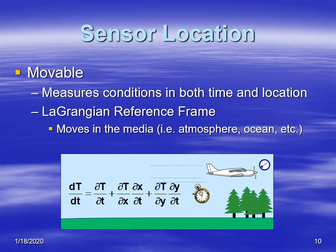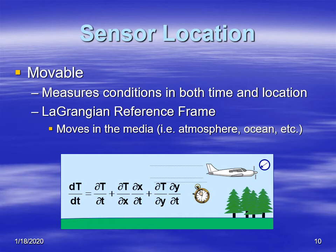A movable platform is one where the instrument is attached to something that's moving. In that case, you're measuring not only how a parameter changes over time, but also how it changes as you move across the ground — north, south, east, west, or a combination. For example, temperature decreases with time at a given location as the sun goes down, but if you're moving to the northeast, you'll also see a temperature gradient because temperatures are colder to the north and warmer to the south. We call this a Lagrangian reference frame, where you're moving within the medium — the atmosphere, oceans, or other media.